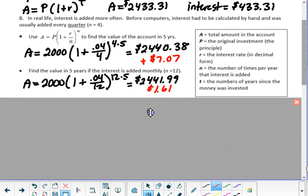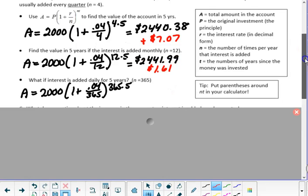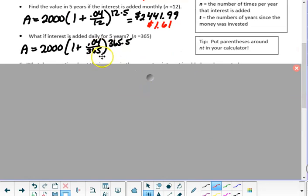Well, what if we added the interest daily? So every day we're going to add 1/365 of 4%. Now, somebody brought up that maybe there's a leap year and there's 366 days, and that would occur at least once during that five-year period. True. So we're going to ignore that for right now and just say 365 each year.